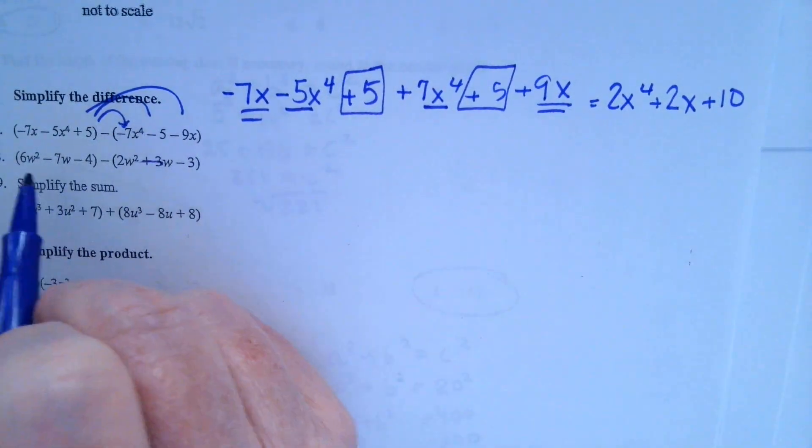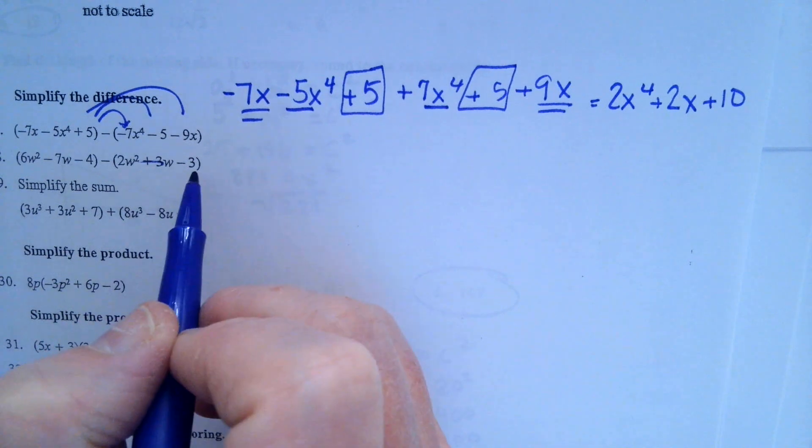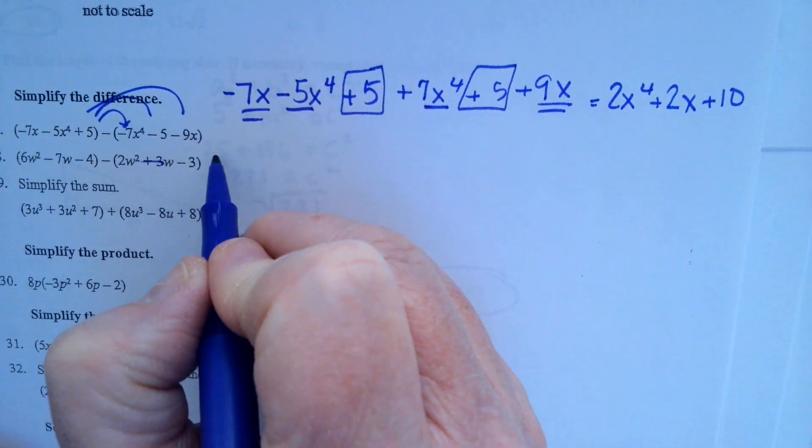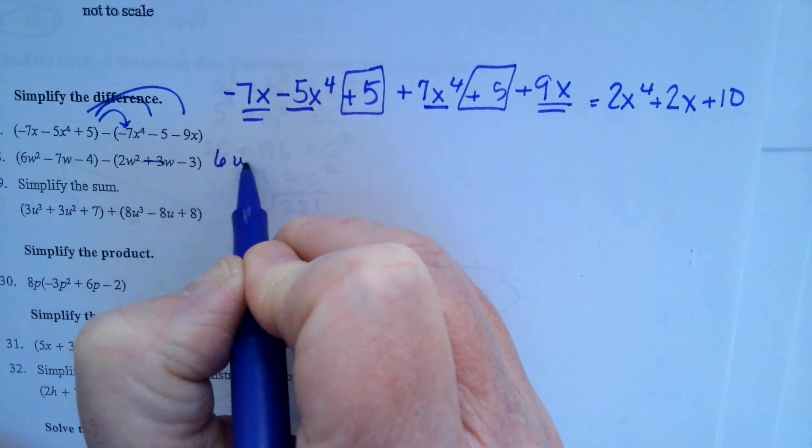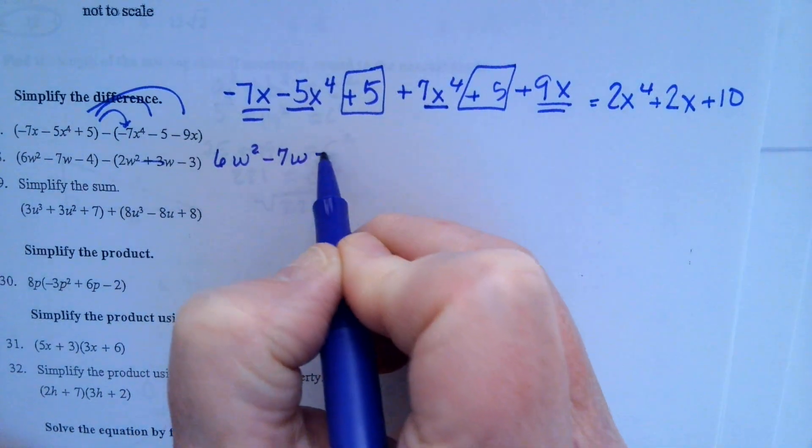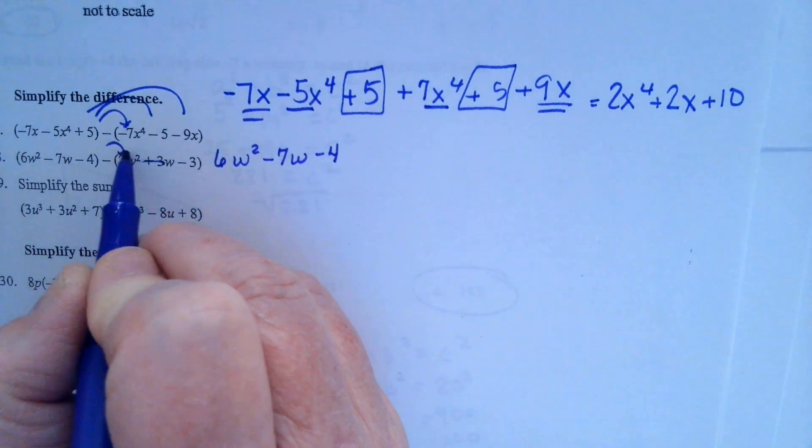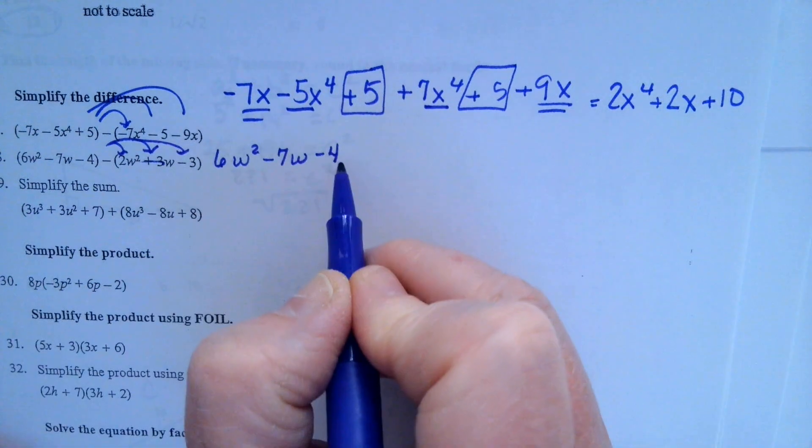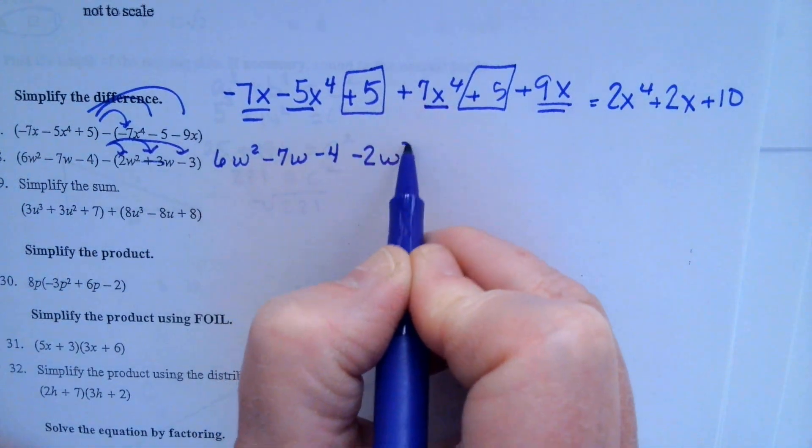Same thing, this one. We need to rewrite it so we get our signs right. So the first parenthesis stays the same. 6w squared minus 7w minus 4.